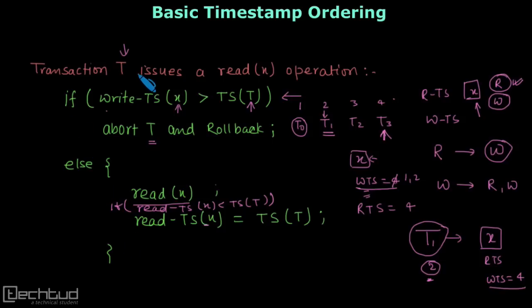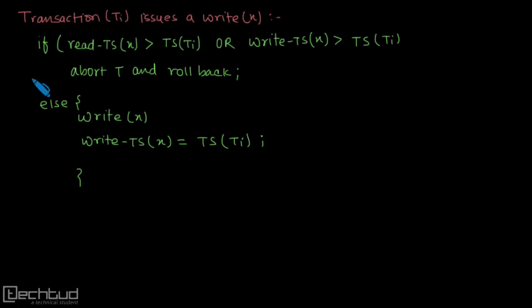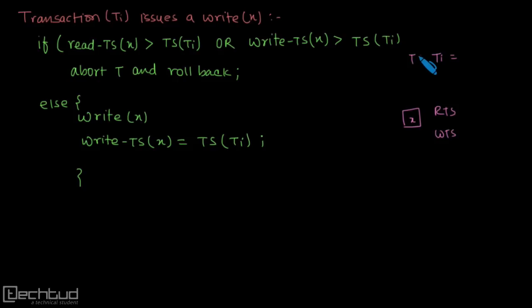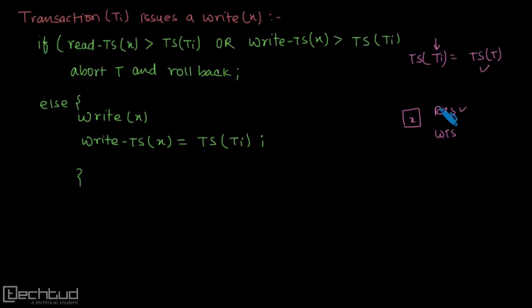The second case is when transaction t issues a write operation on variable x. Variable x has a read timestamp and a write timestamp, and transaction t has its own timestamp representing its arrival time. If the read timestamp of x is greater than the timestamp of t, it means some transaction which started after t has already performed a read on this variable and updated the read timestamp.